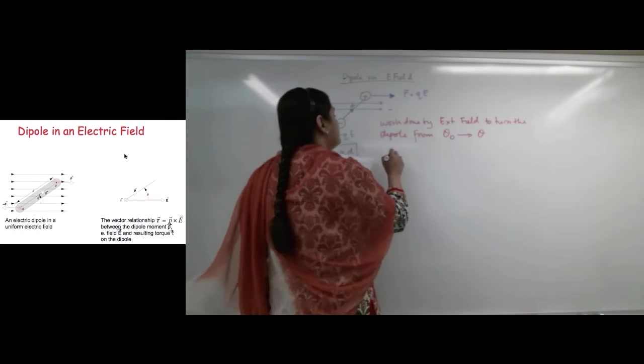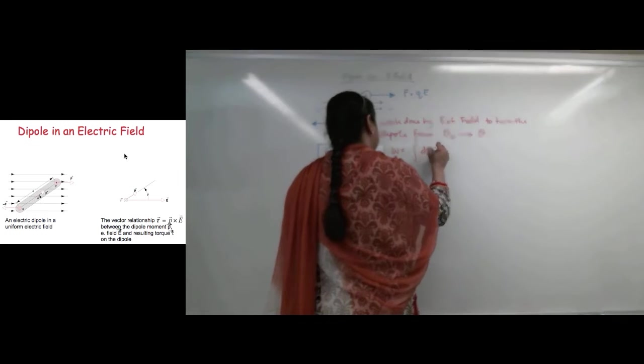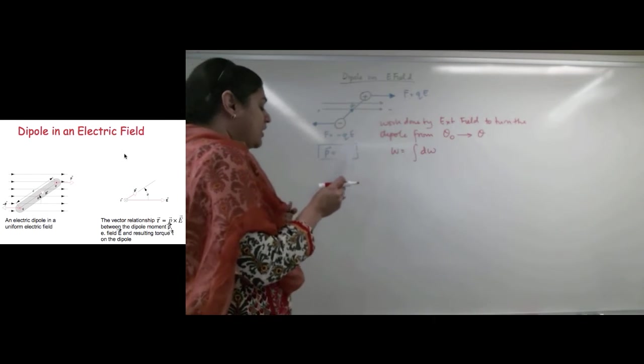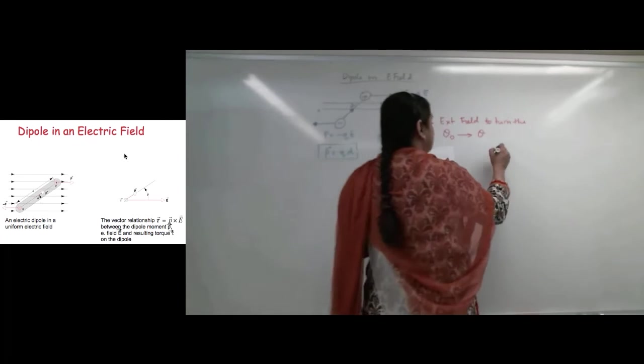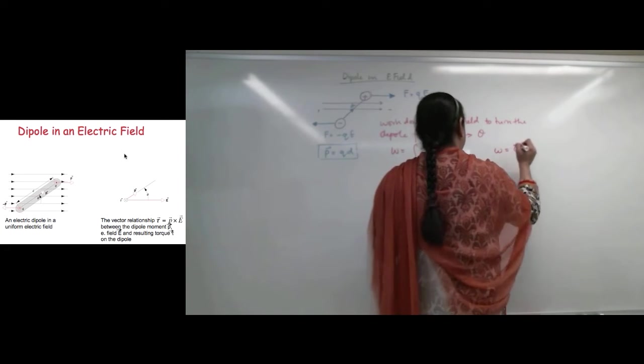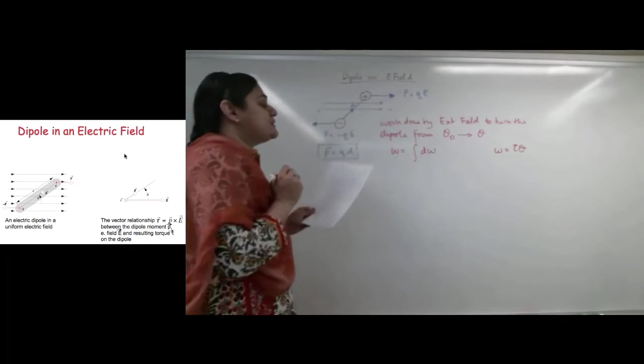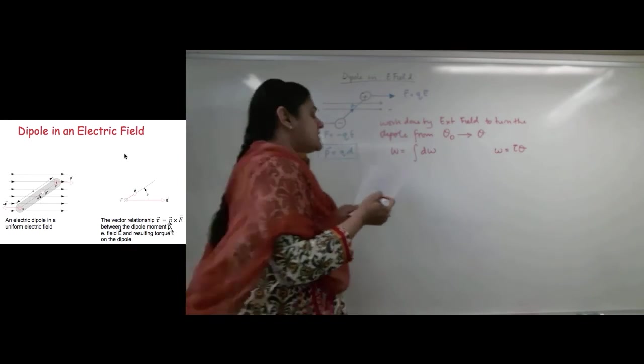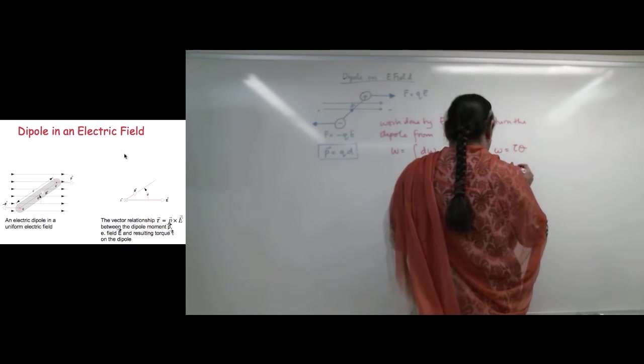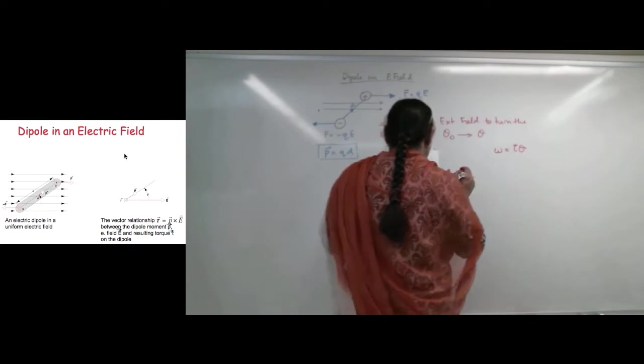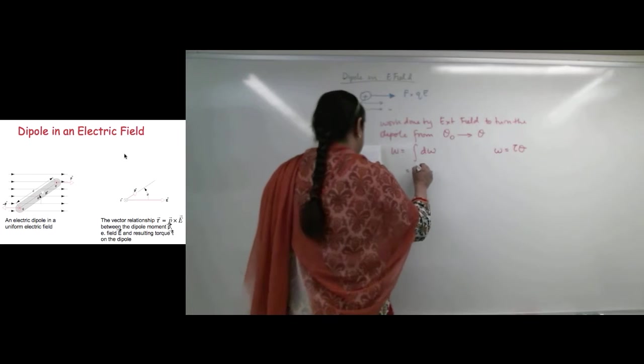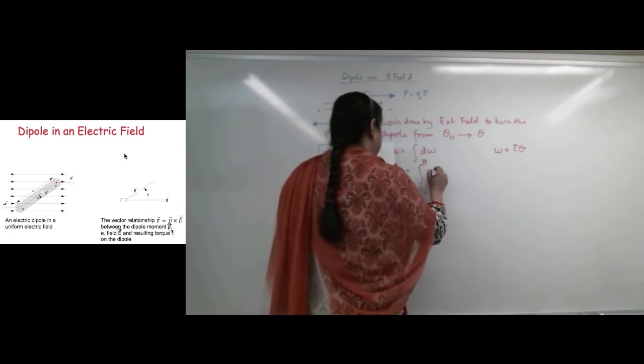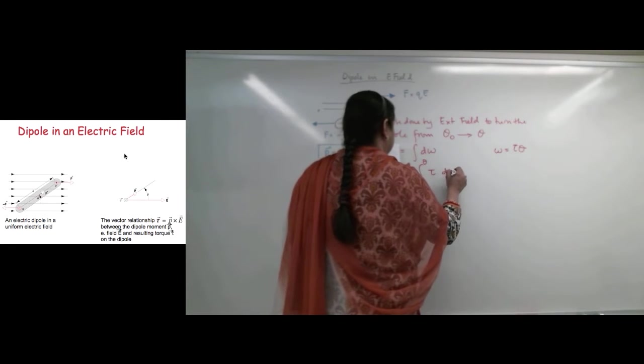We know that this work done will be equals to DW. We recall, we know from intro 1, this W is equals to torque times the angle that it moves through. So this means, in this case, it will be some angle theta 0 to theta, torque times D theta.